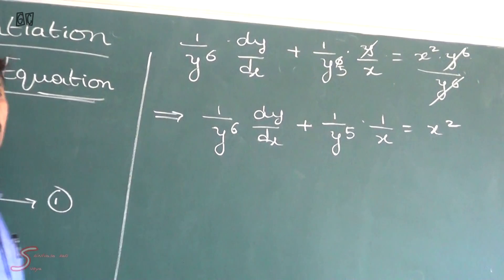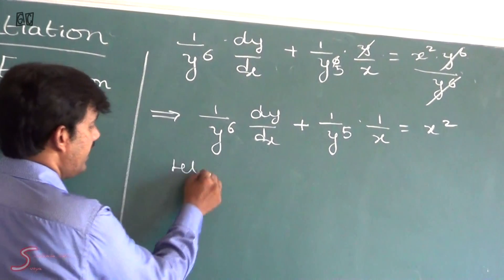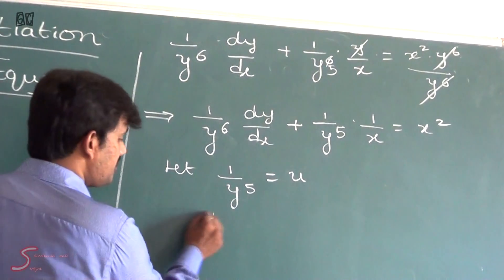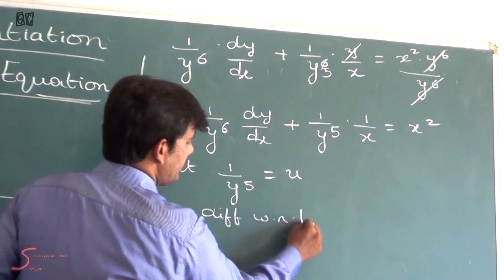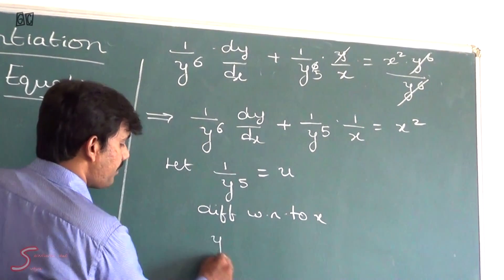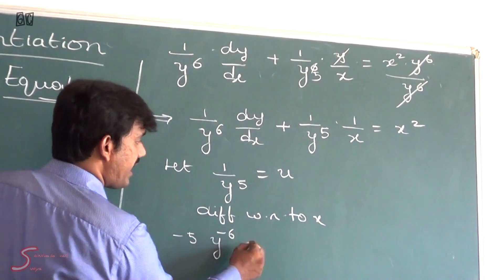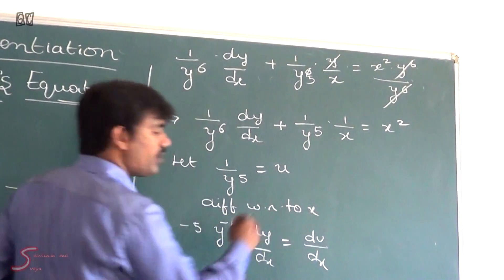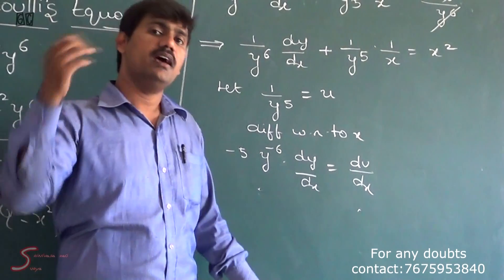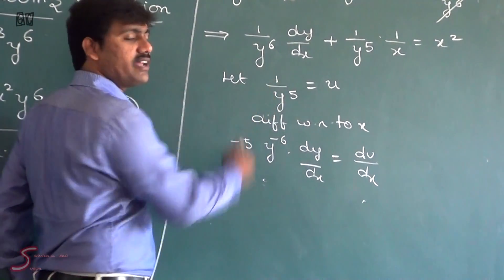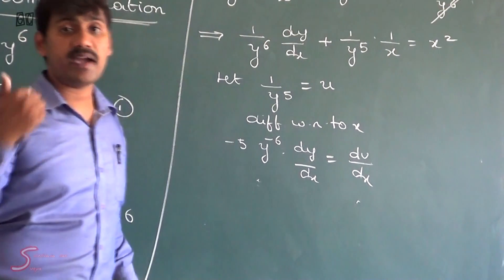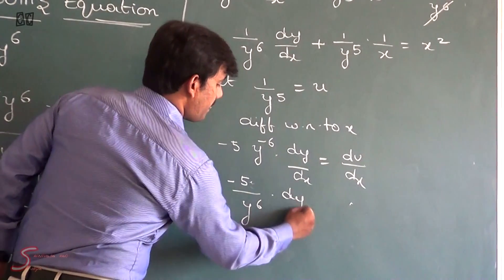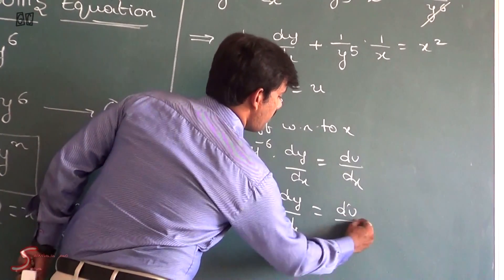Now we use a substitution. Let 1/y⁵ = u. Differentiating: d/dx(y⁻⁵) = −5 · y⁻⁶ · (dy/dx) = du/dx. This gives −5/y⁶ · (dy/dx) = du/dx.